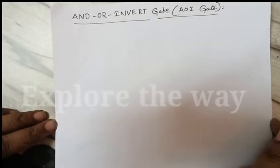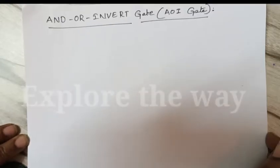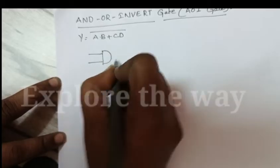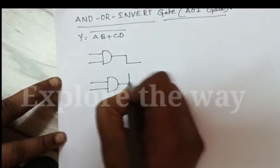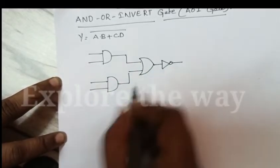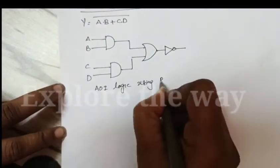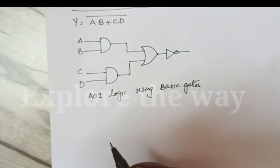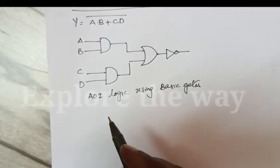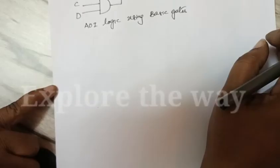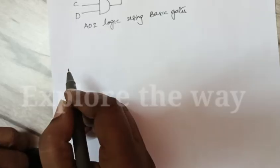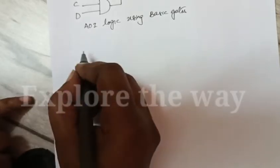We can implement AND-OR-INVERT logic by using basic gates and universal logic gates also. So this is the AOI logic using basic gates, and we can implement the same by using universal logic gates.